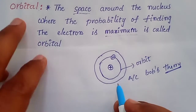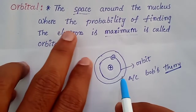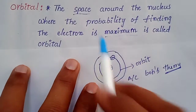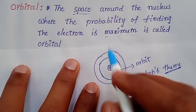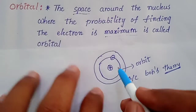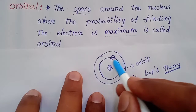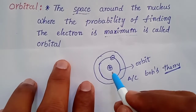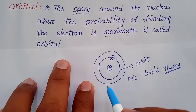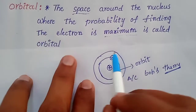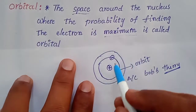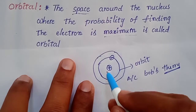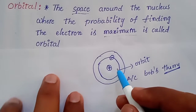So what is an orbital? An orbital is a space around the nucleus. Orbitals also locate around the nucleus, but we can find the electron in these orbitals with maximum probability.